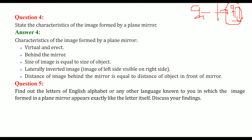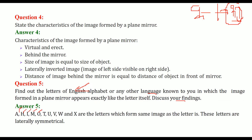There are 26 alphabets, and certain letters, when placed in front of a mirror, appear the same as when seen by the naked eye. We have to find letters of the English alphabet in which the image formed in a plane mirror appears exactly like the letter itself. These are: A, H, I, M, O, T, U, V, W, X. For example, if you place L in front of a mirror, it will appear reversed. That is why the word 'AMBULANCE' is written in reverse on ambulances, so that when seen through a rear view mirror, it reads correctly.